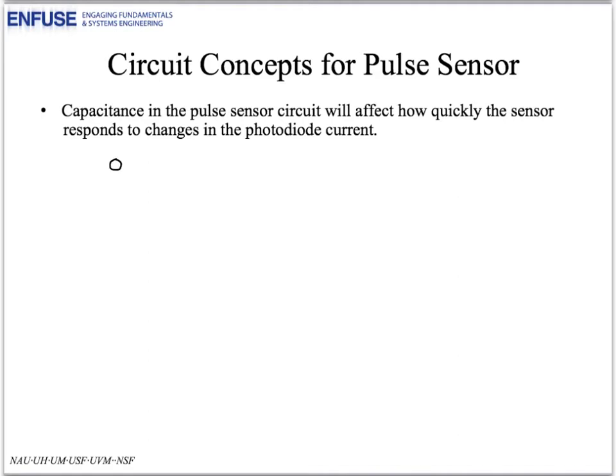So for a capacitor, the value C, if we assume that there is a voltage across the capacitor that's a function of time, then there will be a current that's also a function of time. And the relationship between the current and voltage is that the current is equal to the capacitance times the derivative of the voltage with respect to time.